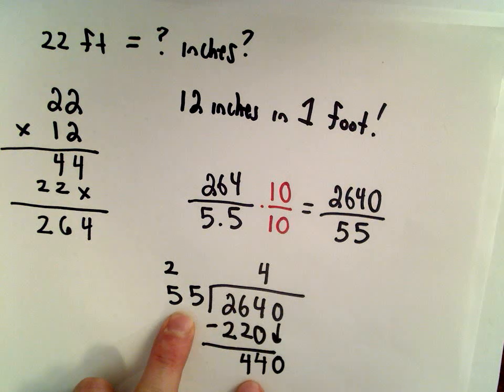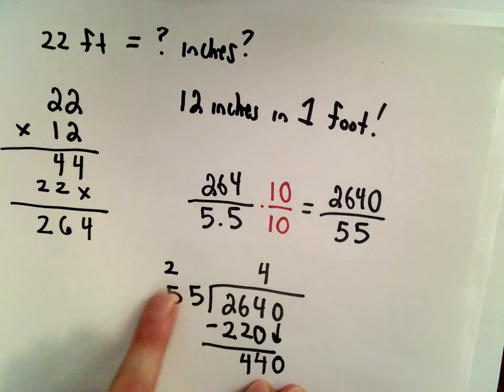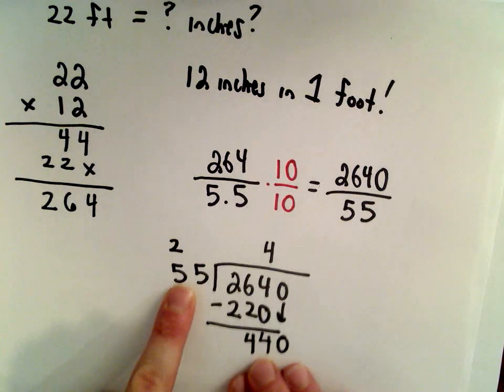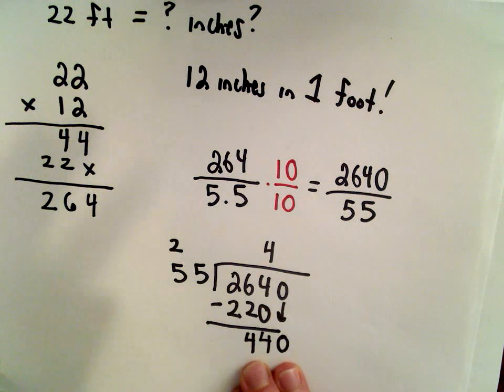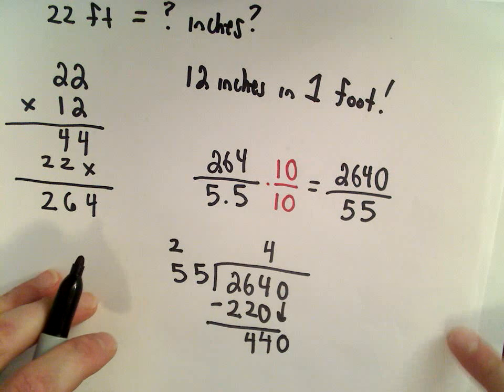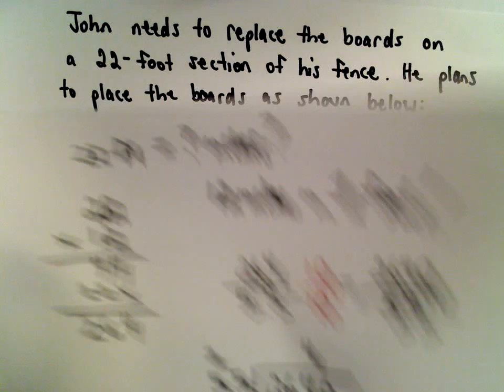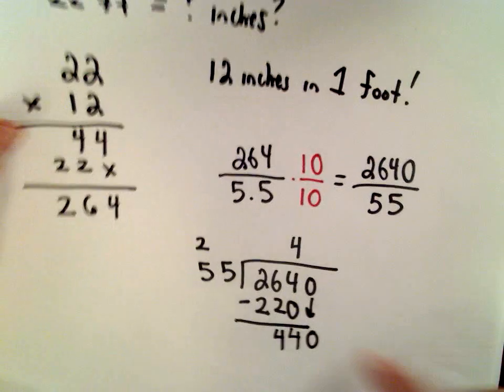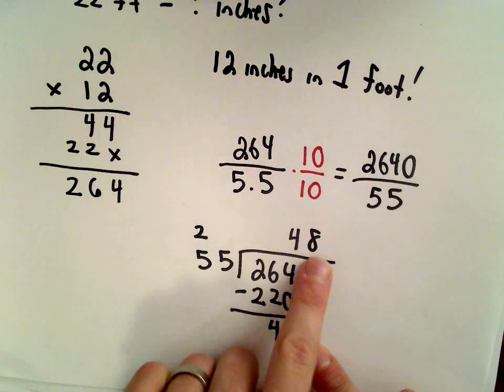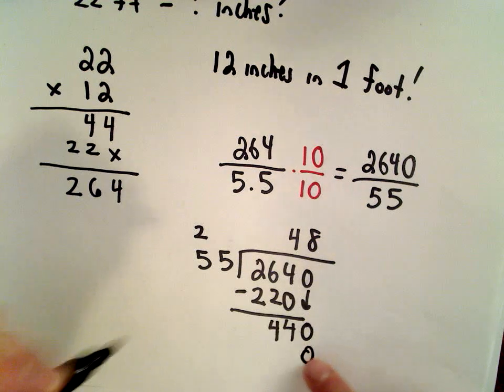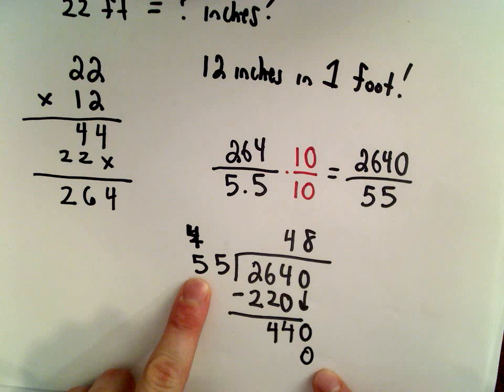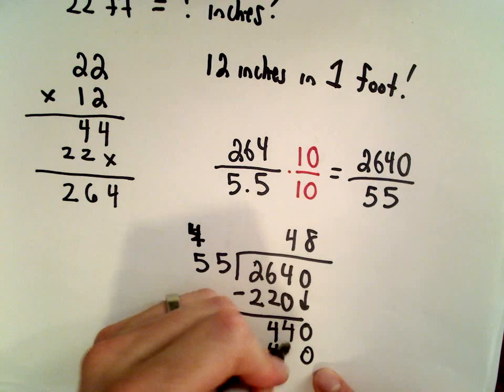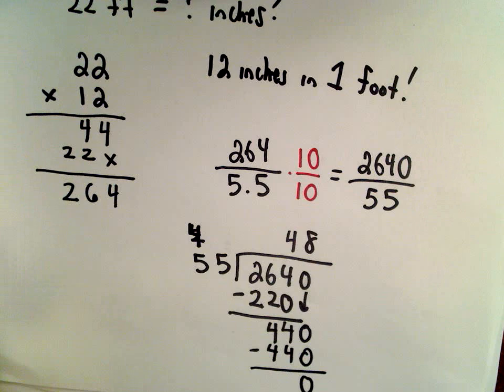So now I have to think - 55 goes into 440 how many times? I'm estimating, rounding the 55 to 50, rounding the 440 to 450, so I'm thinking maybe like 8 or 9 times. I would glance back to the solutions - well, one of them has an 8, so let's try 8. So 8 times 5 is 40, we'll drop down the 0 and carry the 4. 8 times 5 is 50 plus 4, we get 440. That's going to leave us with a remainder of 0.